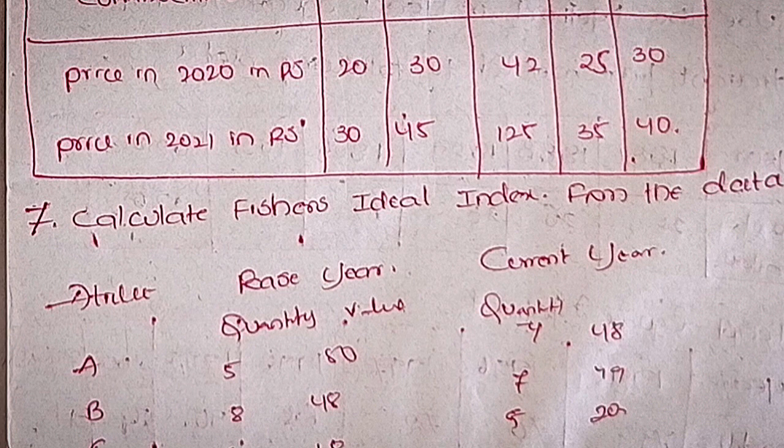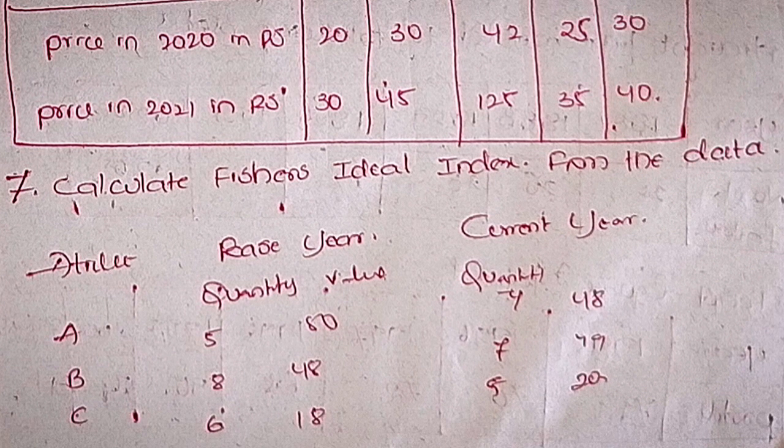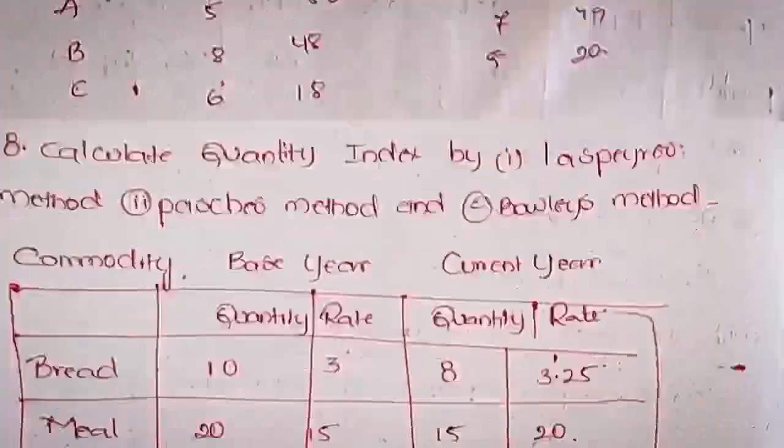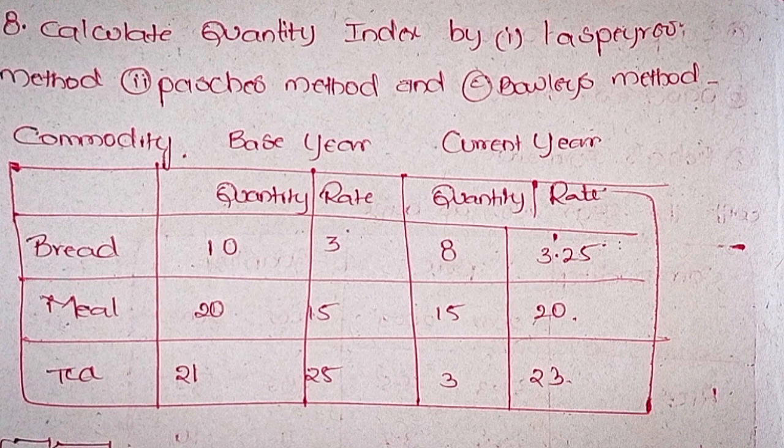Seventhly, calculate Fisher's Ideal Index from the data. Article base year quantity and value, current year quantity and value. A: 5, 50, 4, 48. B: 8, 48, 7, 49. C: 6, 18, 9, 20. Eighthly, calculate quantity index by Laspeyre's method, Paasche's method, and Bowley's method.